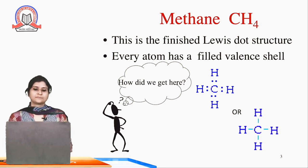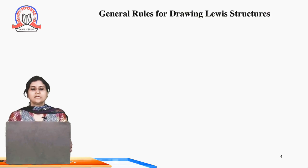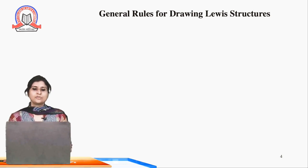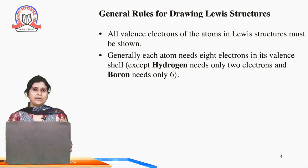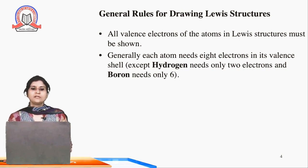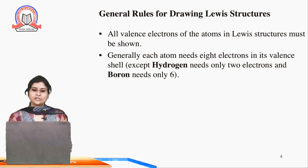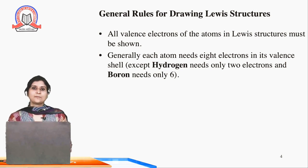We can see the covalent bond between the hydrogen and carbon atom. The general rules for drawing Lewis structures are: all valence electrons of atoms in a Lewis structure must be shown. If there are 4 electrons in the outermost shell of carbon, we show all 4 in dot form. Generally, each atom needs 8 electrons in its valence shell, except hydrogen needs only 2 electrons and boron needs only 6 electrons. These are the exceptional cases.